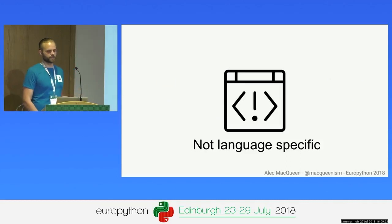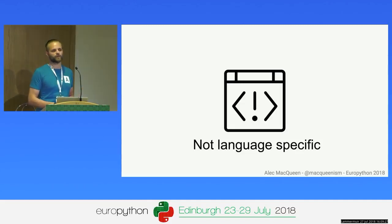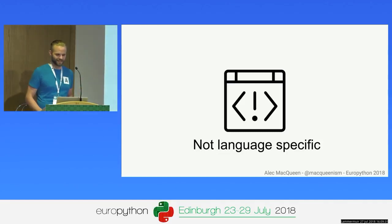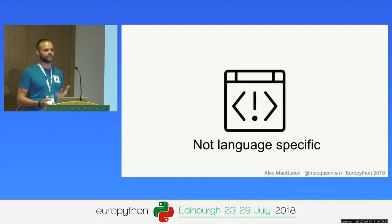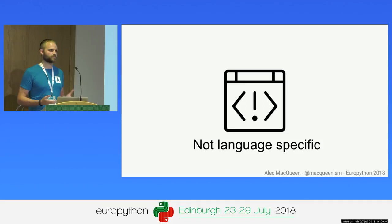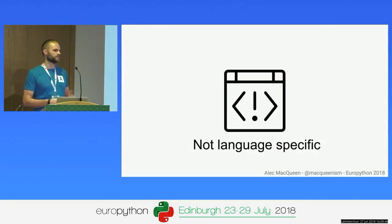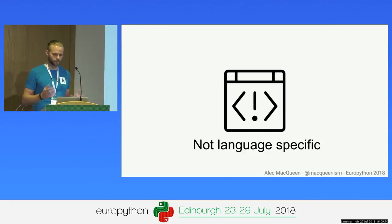GraphQL is not language specific — it's just a specification, just an idea. So that means you can implement GraphQL in whatever language you like, which makes it really flexible to integrate with your systems. There are implementations in JavaScript, Java, Python, Golang — you name it, there's probably an implementation. The data retrieval part is also up to you. You can use SQLAlchemy models, Django models, even text files on disk.